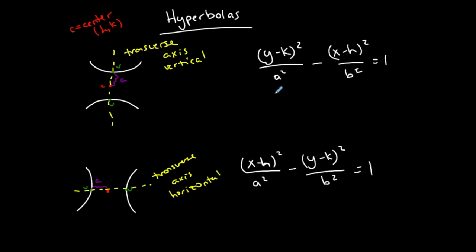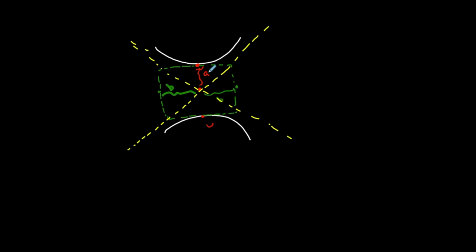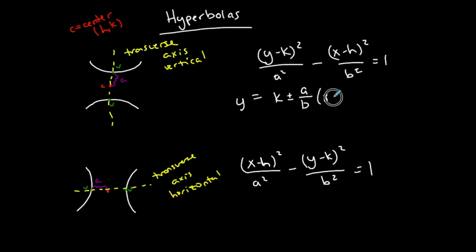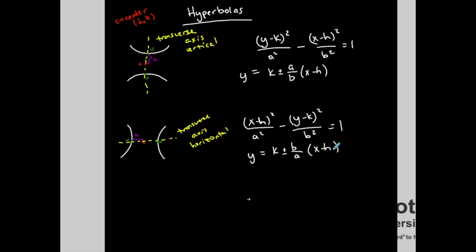The asymptotes are lines, and the way to remember the slope: if the transverse axis is vertical, you go up a and over b, so the slope is a over b. The asymptote equations are y equals k plus or minus a over b times (x minus h). If the transverse axis is horizontal, you go up b and over a, so the slope is b over a, giving y equals k plus or minus b over a times (x minus h). The only difference between the two asymptote equations is a over b versus b over a.